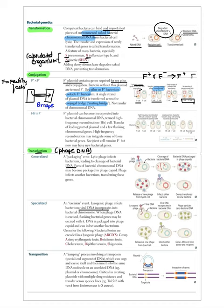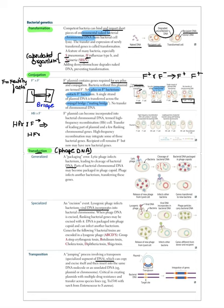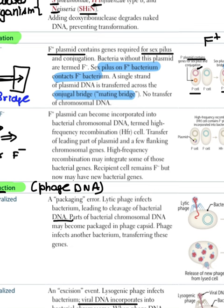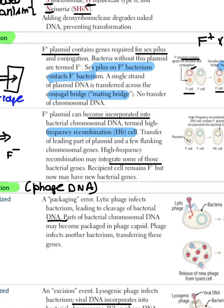In HFR (high frequency recombination), the F-positive plasmid becomes incorporated into the bacterial chromosomal DNA. When HFR mates with F-negative, the recipient remains F-negative but may acquire new genes. This is an important distinction — the recipient stays F-negative after HFR conjugation.